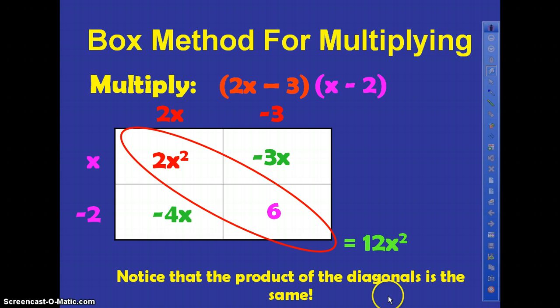Now, one thing that I want you guys to notice here before I go any farther, because this is going to help us when we turn around and use this method to factor: I want you to notice that the product of the diagonals is the same. Right here, 2x squared times 6 gives you 12x squared. Negative 4x times negative 3x gives you positive 12x squared. Your products are the same. Isn't that interesting? Keep that in mind, park that in the back of your brain.